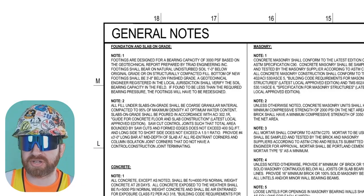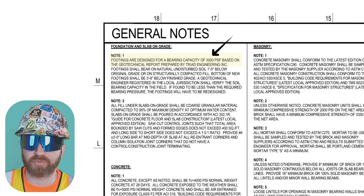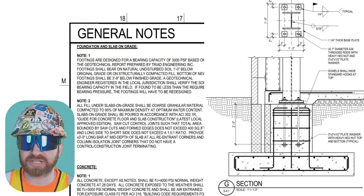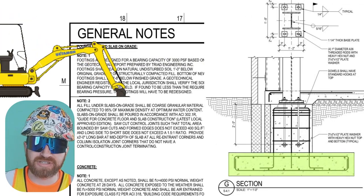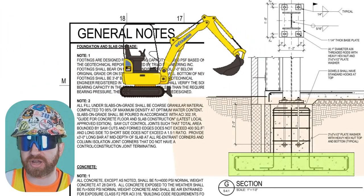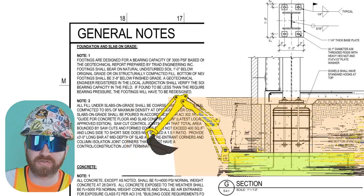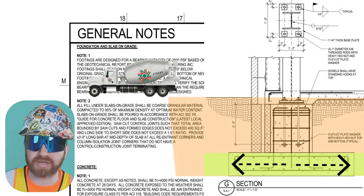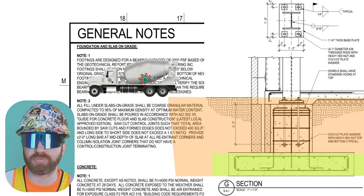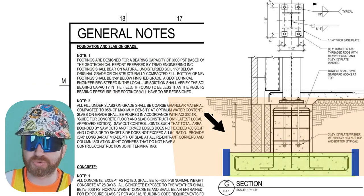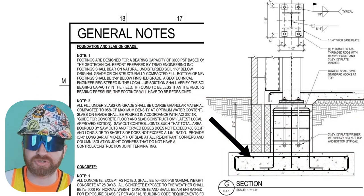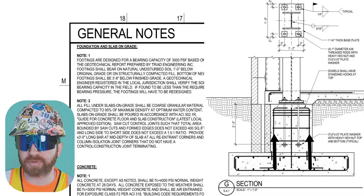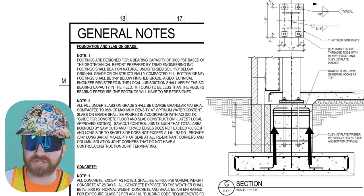Under the foundation and slab on grade section, note one tells us the footings are designed for 3,000 PSF based on a geotechnical report. An excavator has to dig the trench at the correct width and depth to allow the next trade to safely work in it to form and pour these footings. Sometimes structural engineers allow you to bank pour concrete — pouring right into the trenches against the earth — while majority will require formwork in place prior to pouring. There's also rebar in this detail: concrete provides compressive strength while rebar provides tensile strength. The rebar transitions from the footings up into the foundation walls and columns so they're structurally connected.